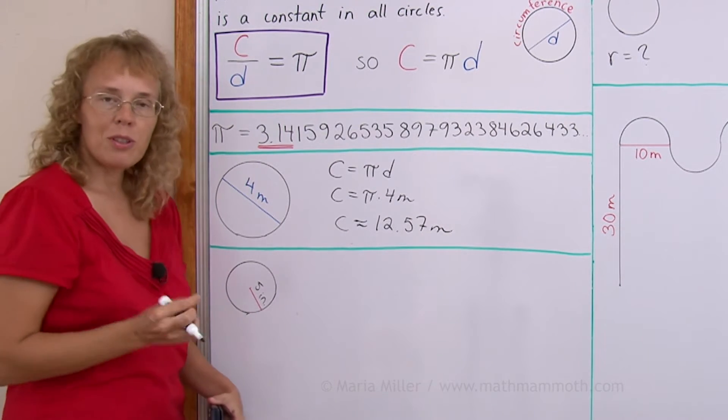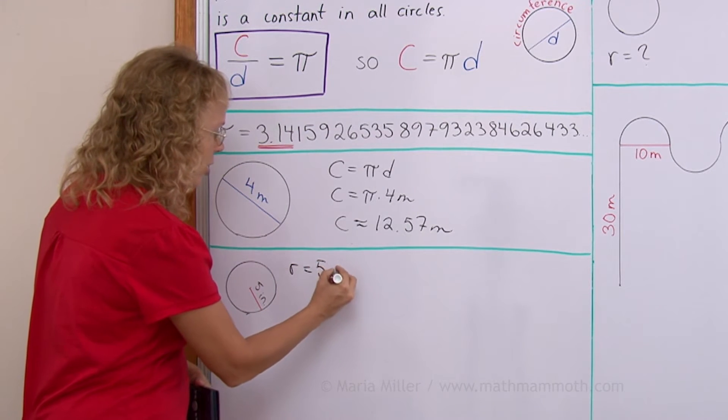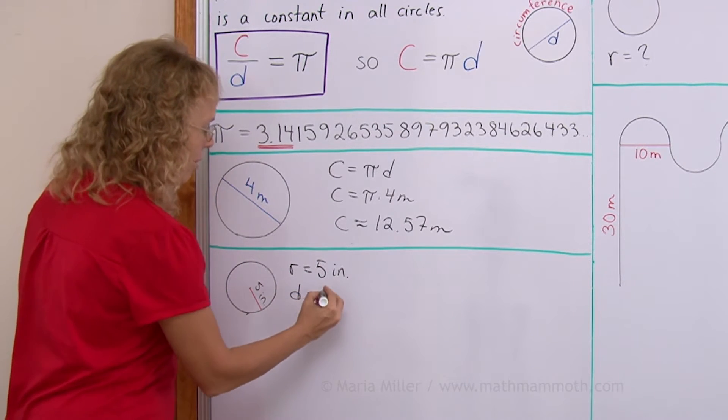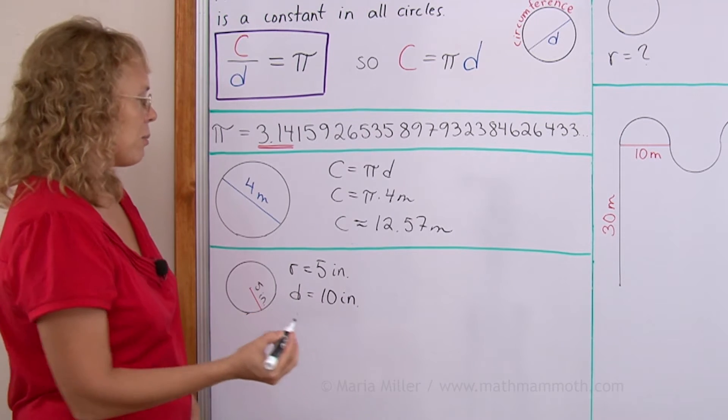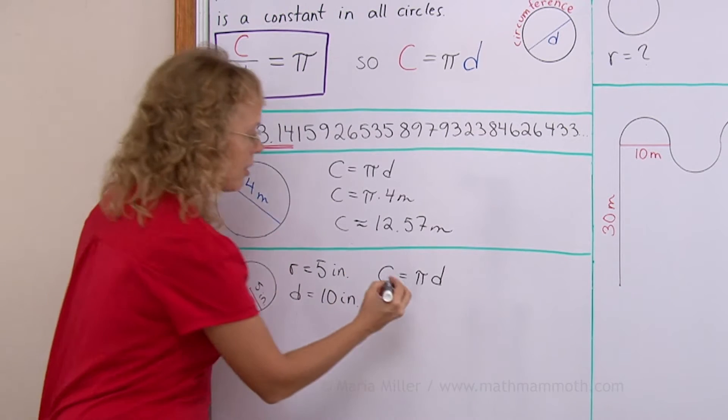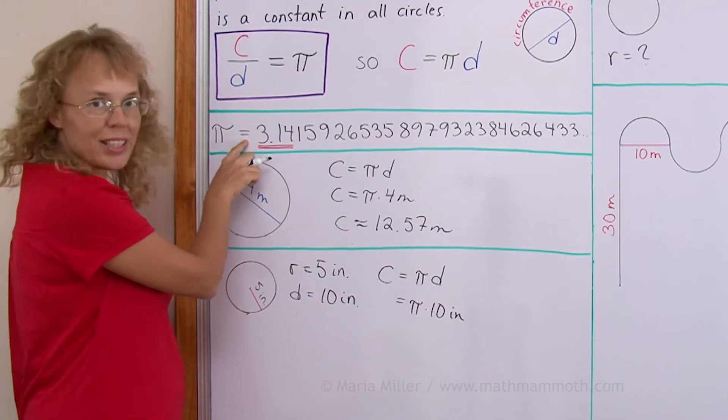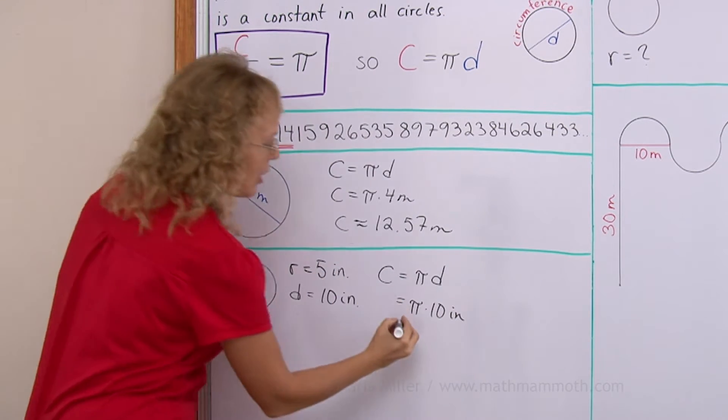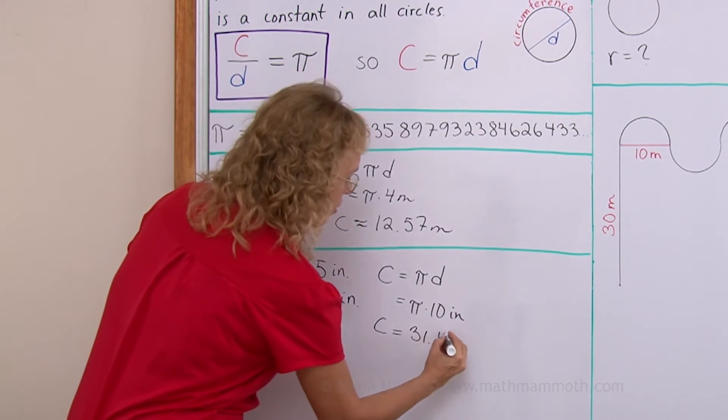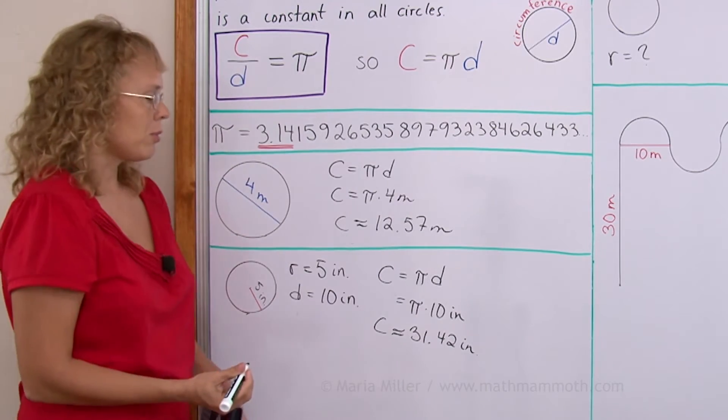Now here is another circle and we know the radius this time. Notice, this is not the diameter. The radius is five inches. But of course we can from that figure out the diameter. The diameter would be double that, ten inches. And now we can calculate the circumference. It is again pi times D, pi times the diameter. Or pi times ten inches. So multiply this number by ten, which is of course very easy. You just move the decimal point. So we get the circumference is 31.42 inches rounded to two decimals. About 31.42 inches.